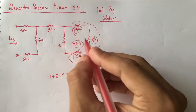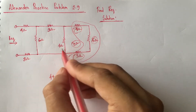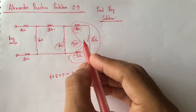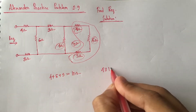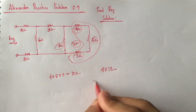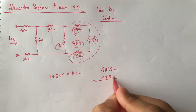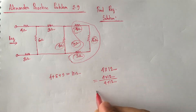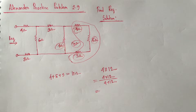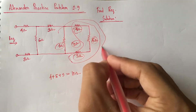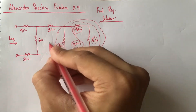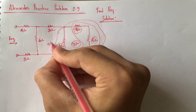Now, this 12 ohm resistance is in parallel with this 4 ohm resistance. So the 4 ohm resistance in parallel with 12 ohm resistance can be replaced by a resistance of 3 ohm. The equivalent resistance of this part is 3 ohm.